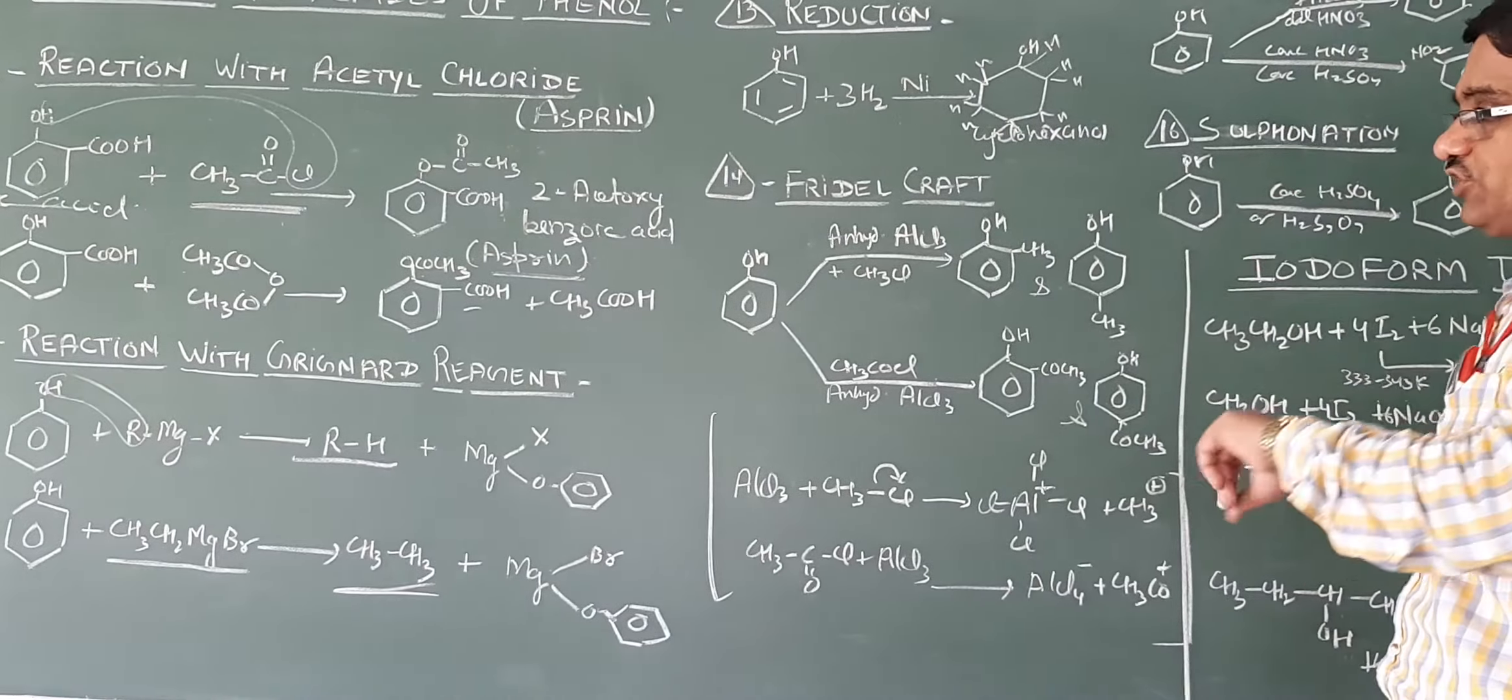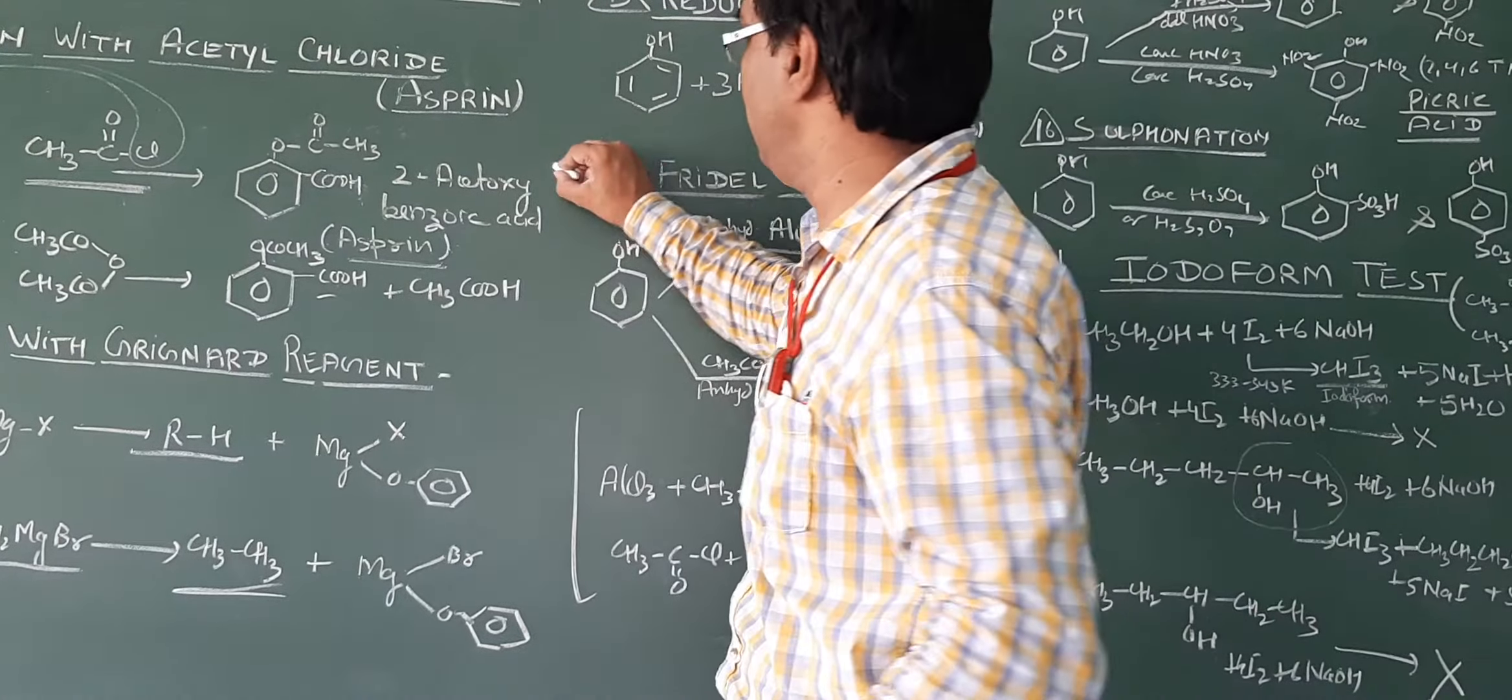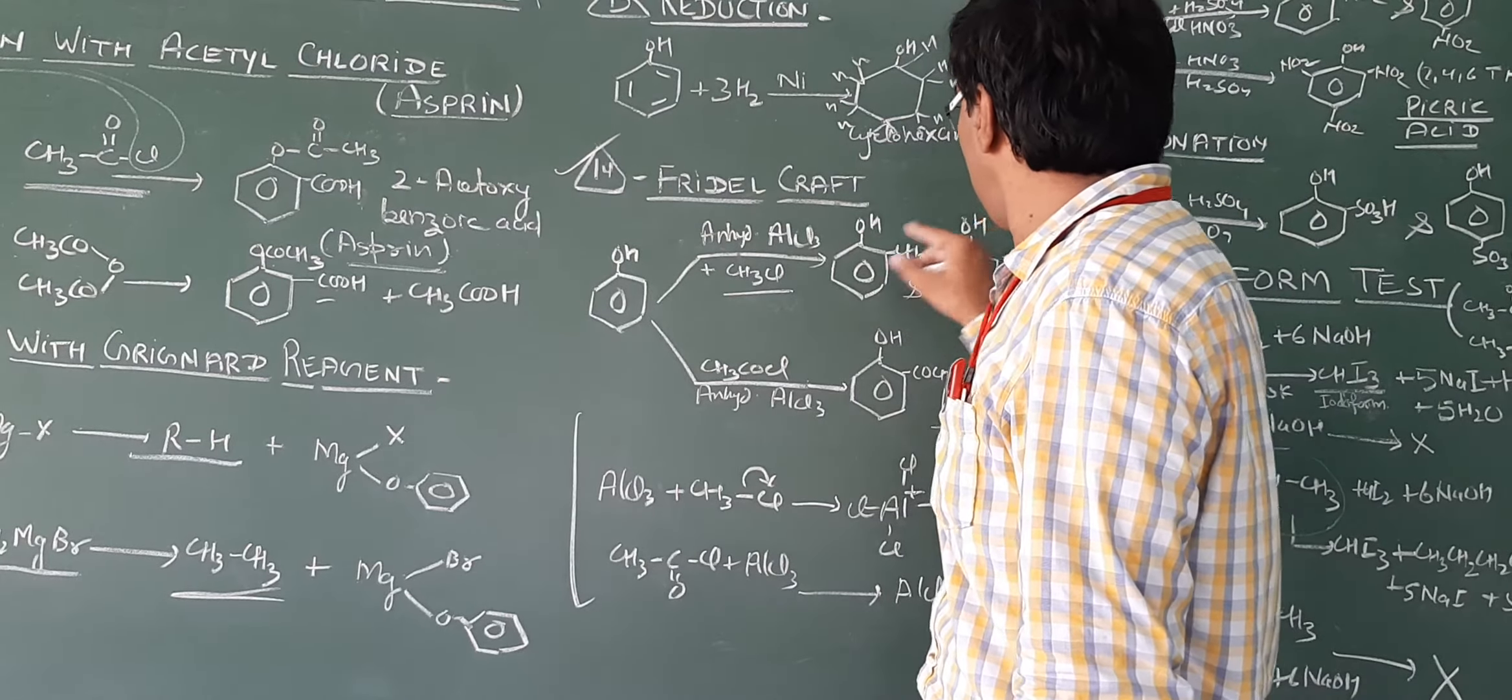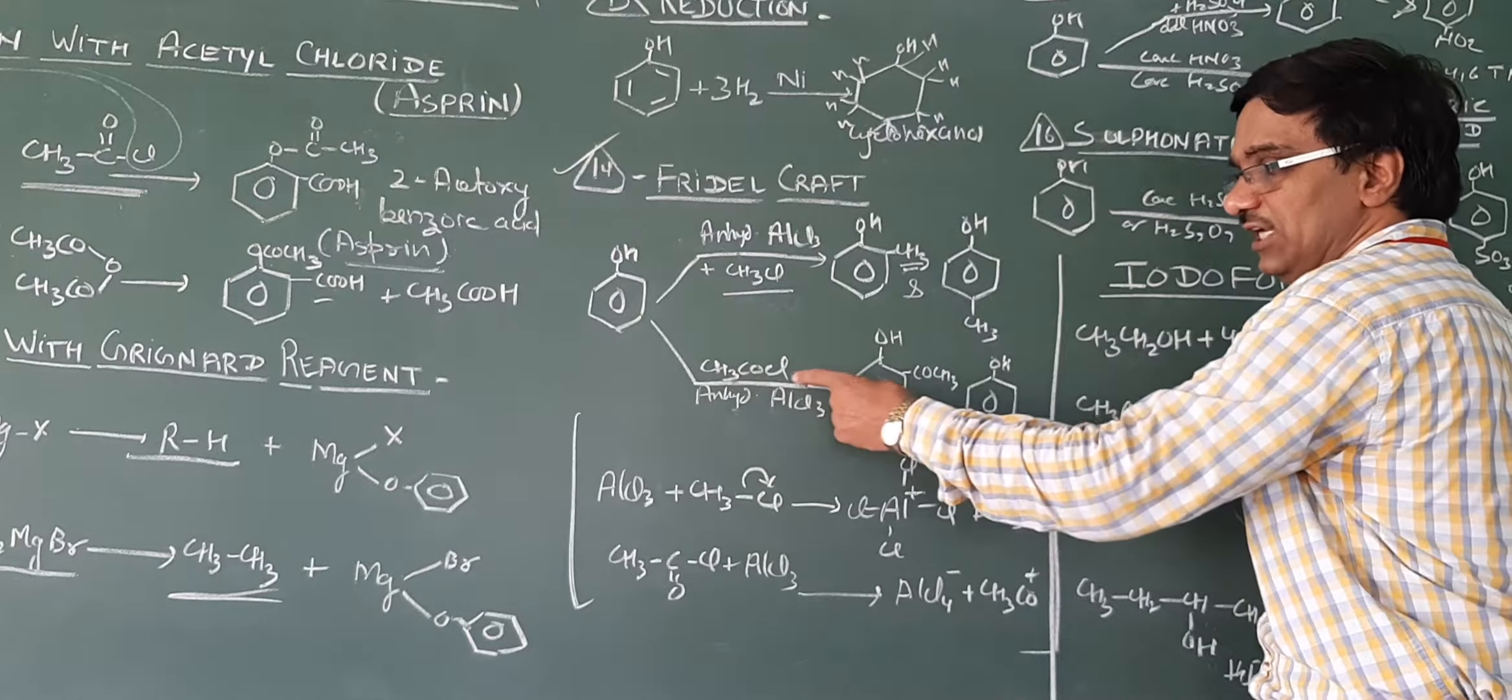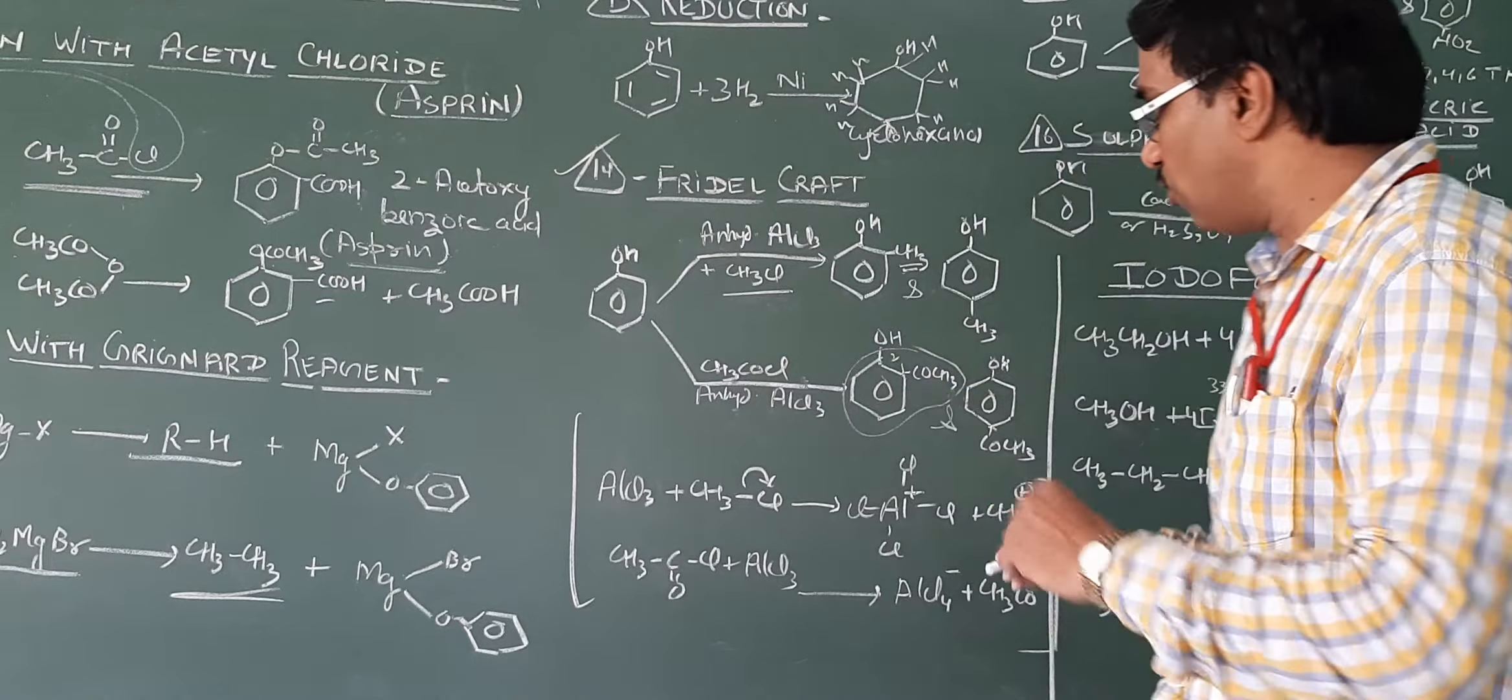Next, Friedel-Crafts alkylation or acylation. If alkylation, with CH3Cl, it will give ortho and para products. Ortho hydroxyl 2-methyl phenol and 4-methyl phenol. For acylation, if we do acetylation with acetyl chloride, we get 2-hydroxy acetophenone. Hydroxyl will be at position 1, 2, ortho hydroxyl acetophenone and para hydroxy acetophenone.